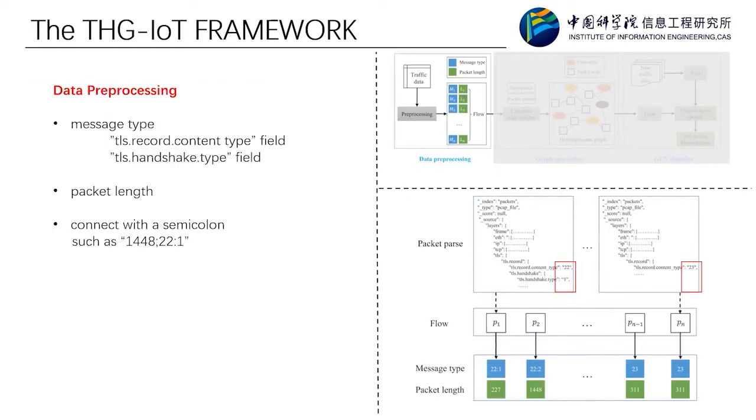Data preprocessing. We take a specific flow as an example to illustrate the particular process of data preprocessing and show it in the figure. Each TLS packet in the flow has a TLS record content type field, and the handshake protocol packet has a TLS handshake type field. We extract the values of these fields as the message type of the packet. And further, we connect the message type and packet length of the same packet with a semicolon. So, each packet is represented by a string Mi Li. And each flow can be represented by a sequence of strings M1 L1, M2 L2, and Mn Ln.